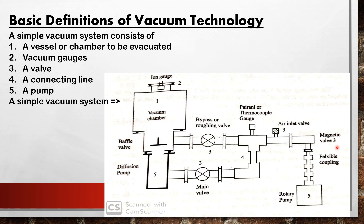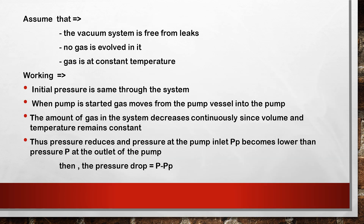A simple diagram of a vacuum system is shown. It includes a vacuum chamber connected to an ionization gauge, baffle valves, a diffusion pump, a main valve, a roughing valve, and a thermocouple or Pirani gauge. It also includes an air inlet valve, a magnetic valve, a flexible coupling, and a rotary pump.